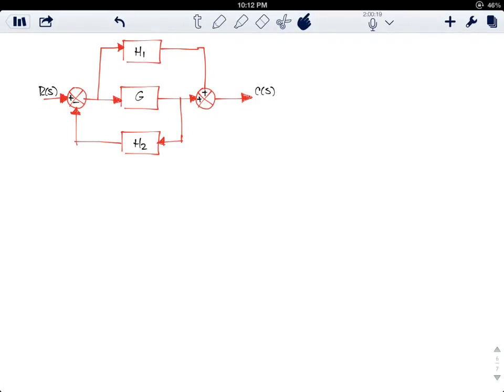You're given this block diagram and you are asked to simplify it to find the transfer function. I will start by moving this feedforward element.